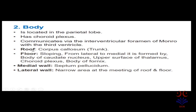The body of the lateral ventricle has a roof formed by the corpus callosum — specifically the body or trunk of the corpus callosum. The floor is formed in a sloping shape from lateral to medial by the body of the caudate nucleus, the upper surface of the thalamus, the choroid plexus, and the body of the fornix. The medial wall is formed by the septum pellucidum, and the lateral wall is narrow, formed by the union of the roof and the floor.